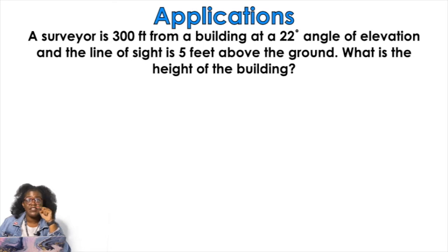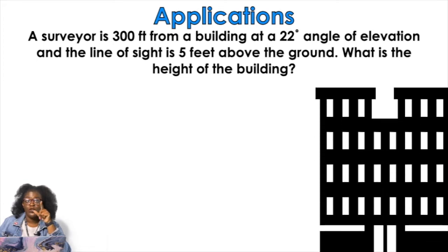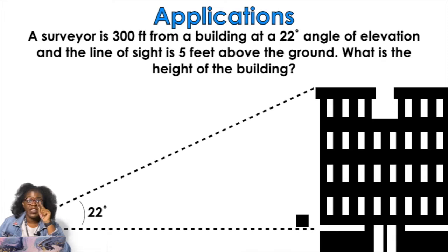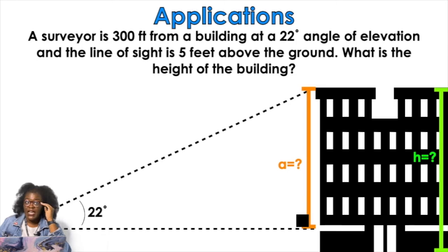Applications. A surveyor is 300 feet from a building at a 22 degree angle of elevation, and the line of sight is five feet above the ground. What is the height of the building? So you have a building. You have a surveyor. Homegirl. You see her? What we're trying to figure out is she's looking at the top of the building, right? And it says that she's doing that at a 22 degree angle. So I put the little 22 degree in there. The height of the building is what we're trying to find from the bottom up. But what I'm figuring out with this triangle that we formed is A, which is not the total height of the building. It's just the line of her sight, which is five feet above the ground.